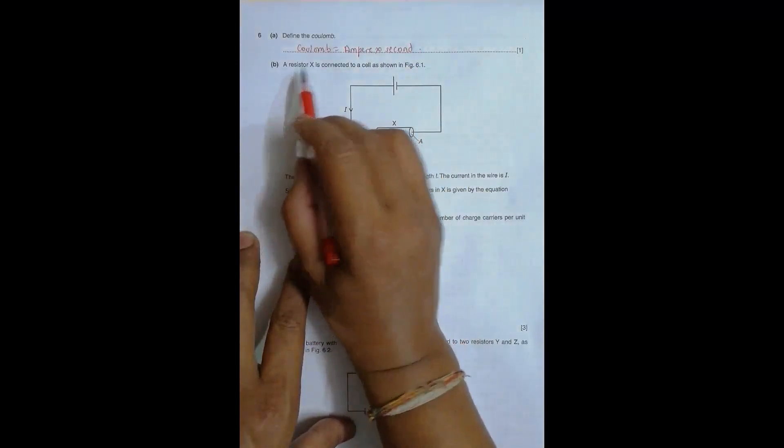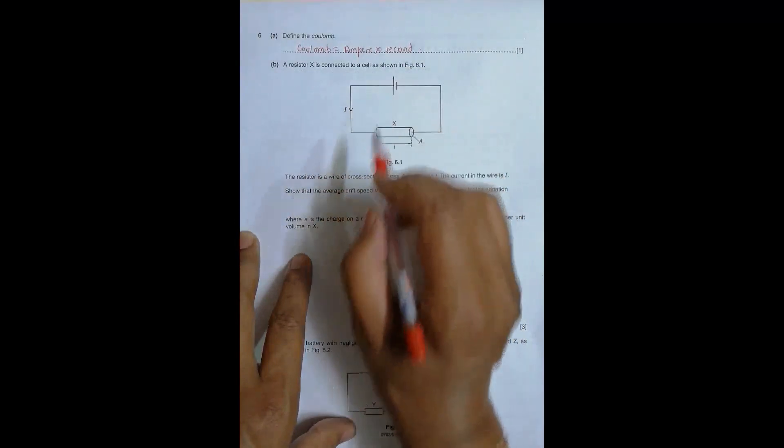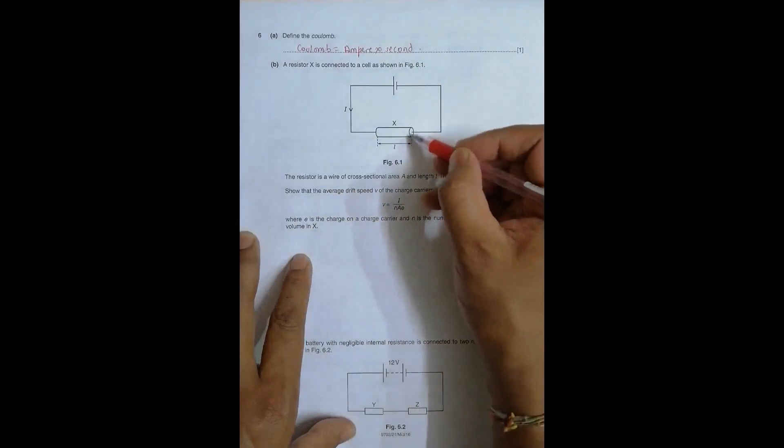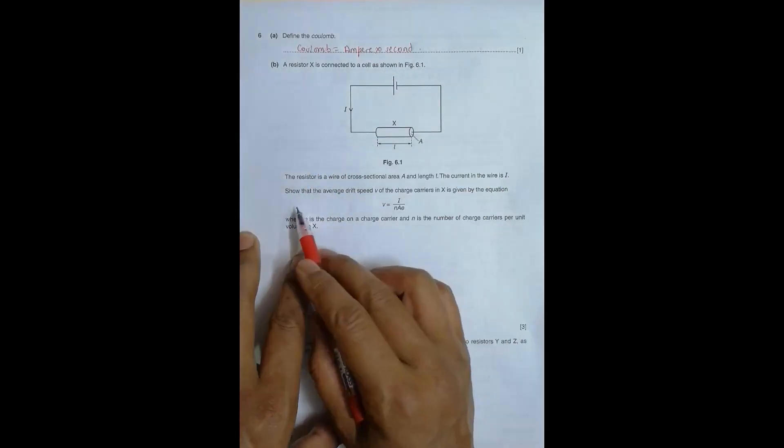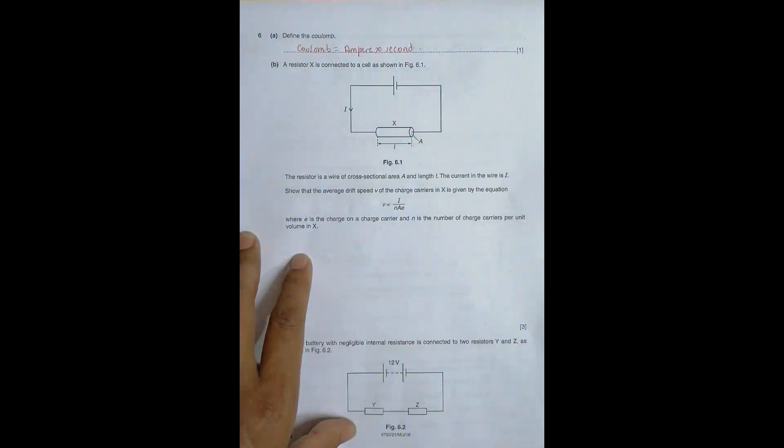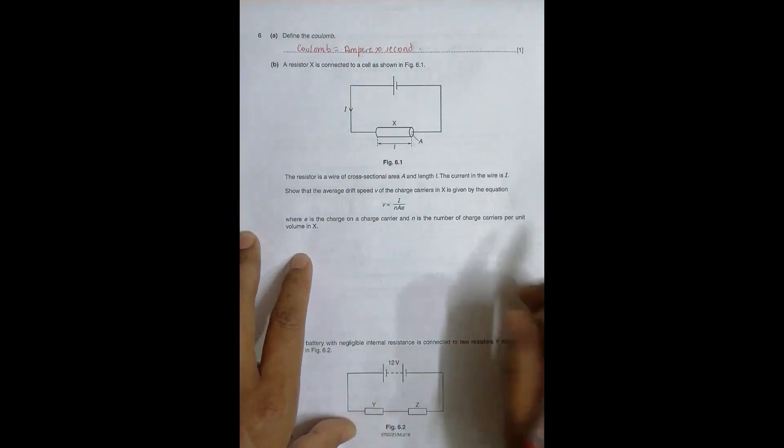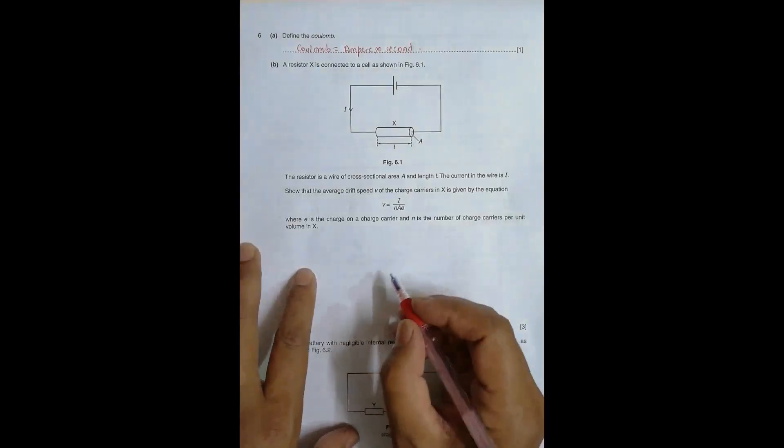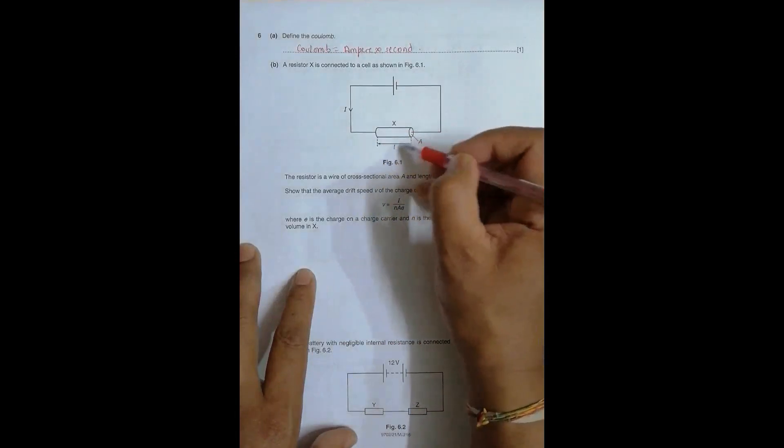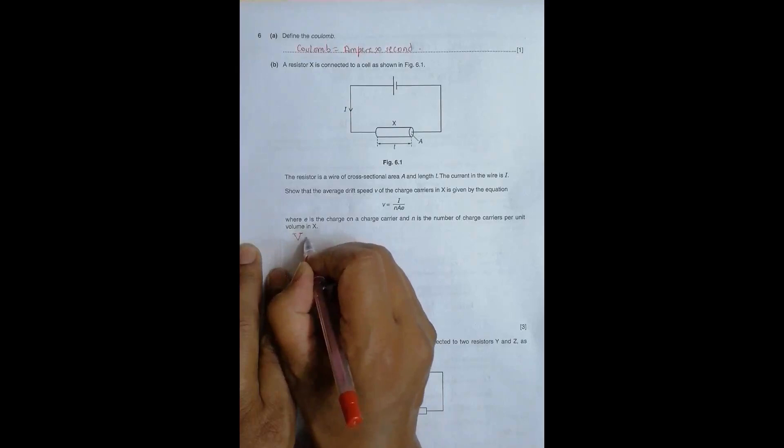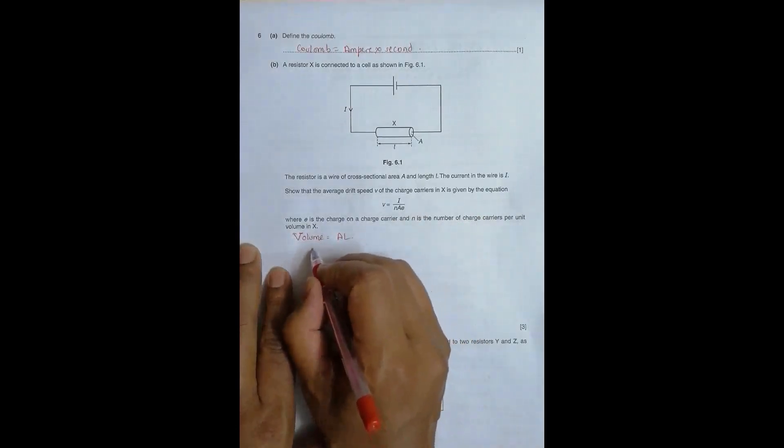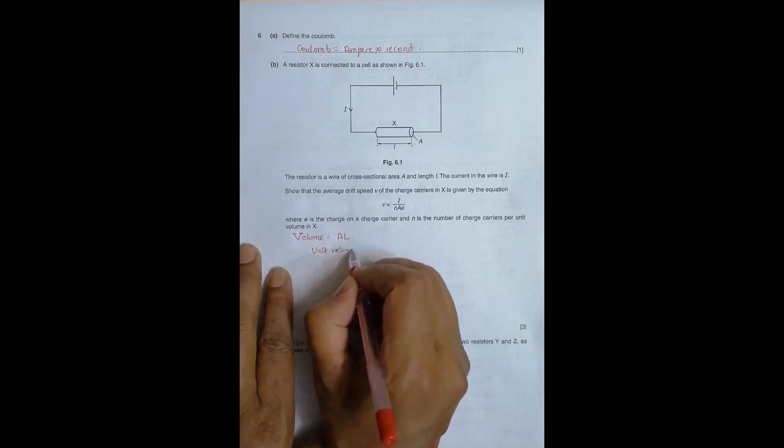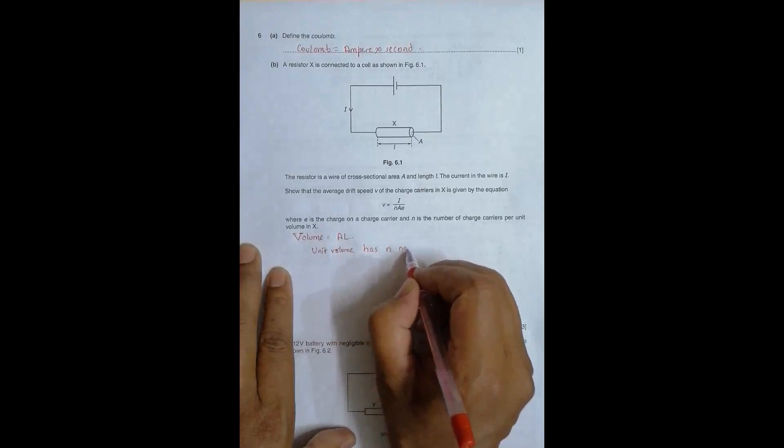Now in number B, a resistor X is connected to a cell as shown in figure 6.1. This is the cell. The resistor is a wire of cross sectional area A, so this is the cross sectional area A, and length L. This is the length L. The current in the wire is I. This is the current. Show that the average drift speed V of the charge carriers in X is given by the equation V equal to I by NAE. So it's actually the theoretical question from the book or from the chapter itself. So one thing that we have to remember here is, first we have to find the volume of this thing. So the volume V should be equal to A into L. Now since we know that unit volume has N number of charge carriers.